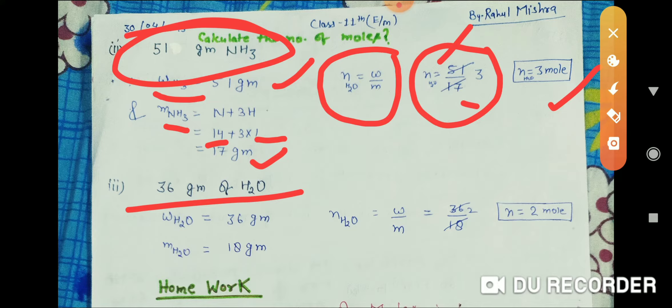...grams of H2O. In this case, the given mass of H2O is 36 grams, and the molecular mass of H2O is 18 grams. We all know that n = W/m. Number of moles of water equals given mass of...